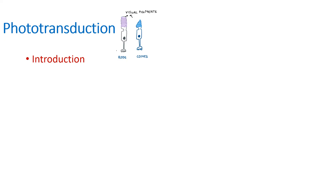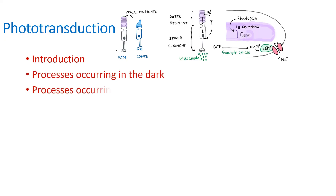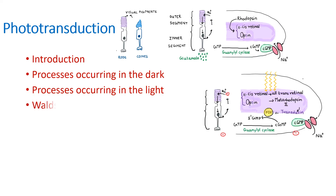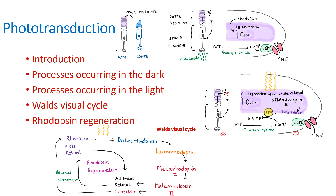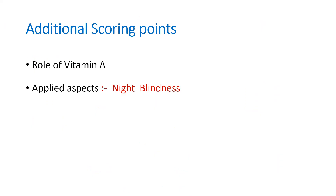In a nutshell, when such a question comes, first write the introduction containing the definition and what photoreceptors are. Then write about the processes occurring in the dark and the processes occurring in the light. Then write about Wald's visual cycle and rhodopsin regeneration. For additional points, you can also write about the role of vitamin A, and as an applied aspect, write about night blindness, which occurs due to deficiency of vitamin A. With that, the topic is complete.